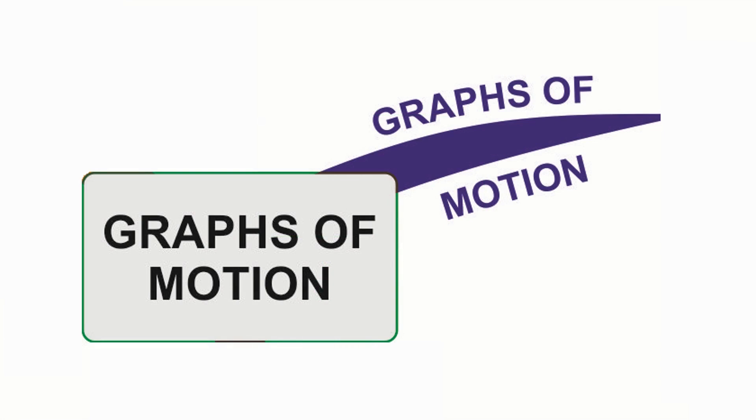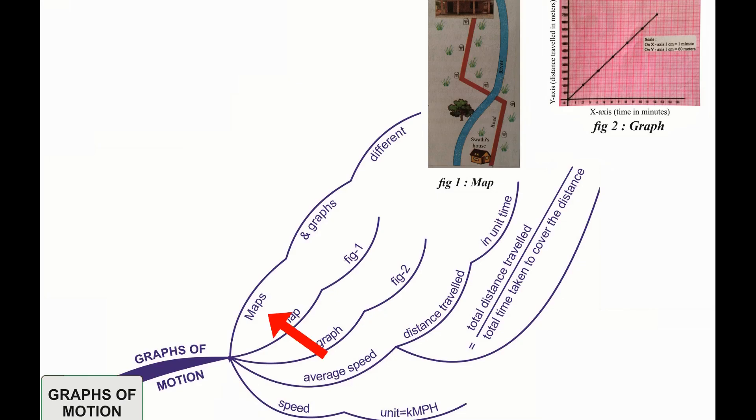Let us see our first branch graphs of motion. Maps and graphs are different. A map shows the route of journey whereas a graph is plotted along X and Y axis.